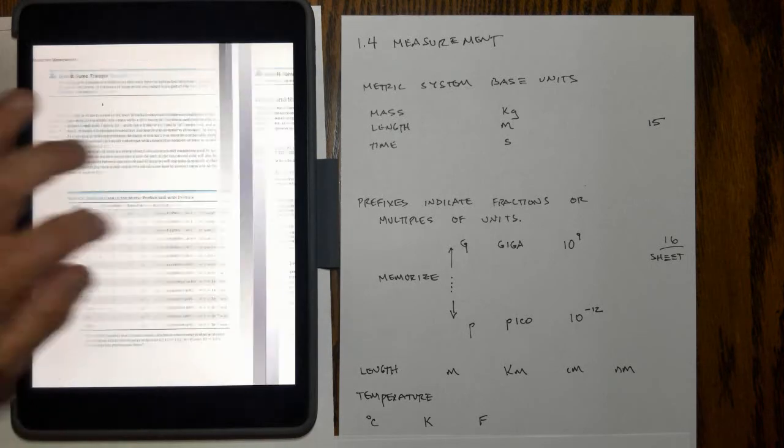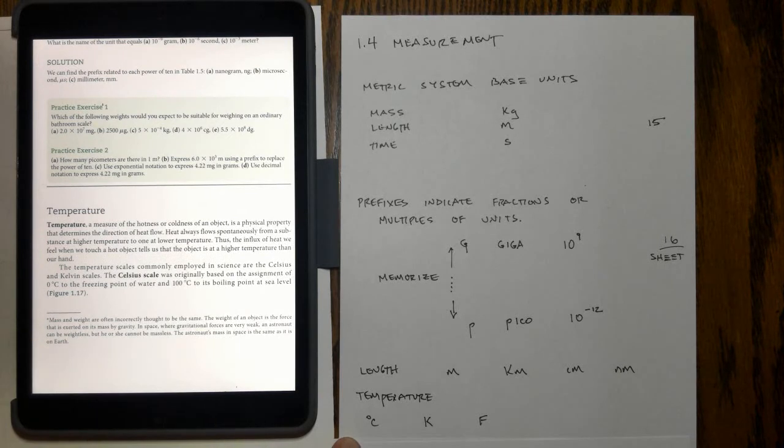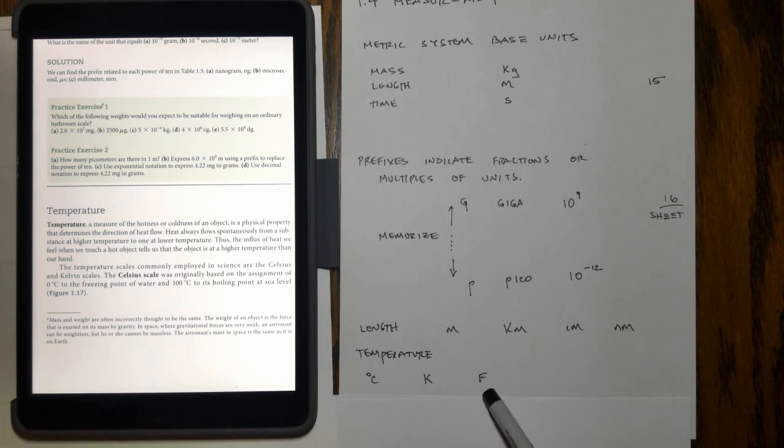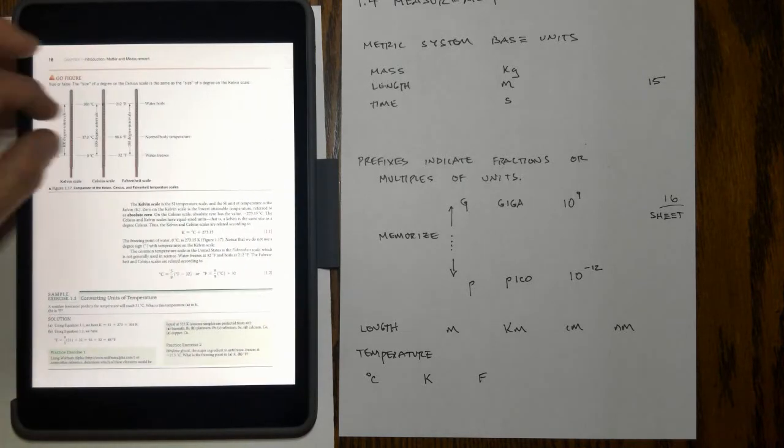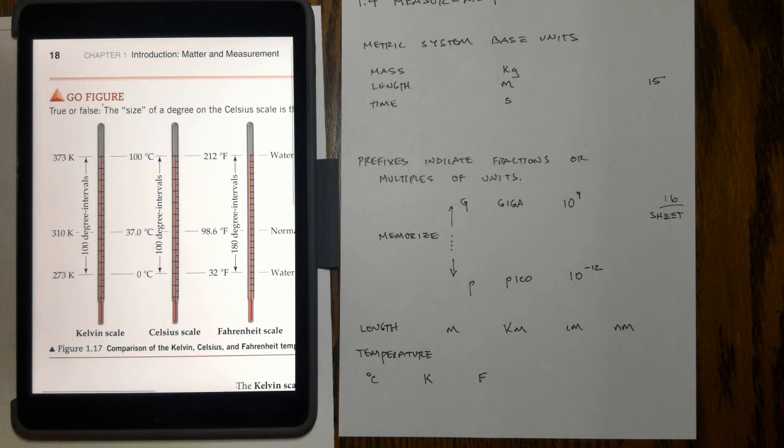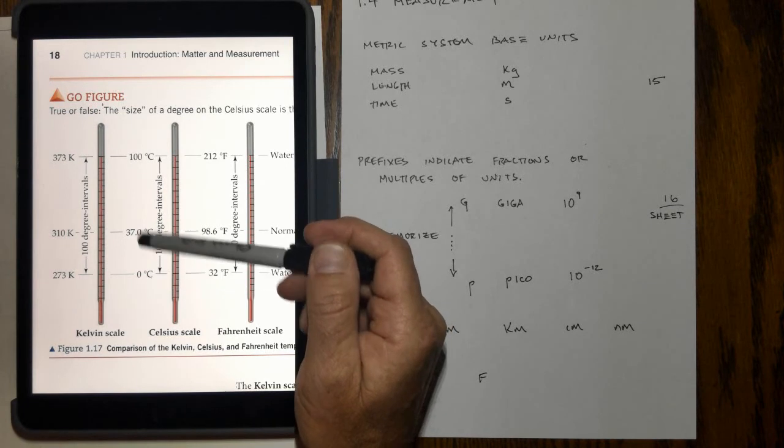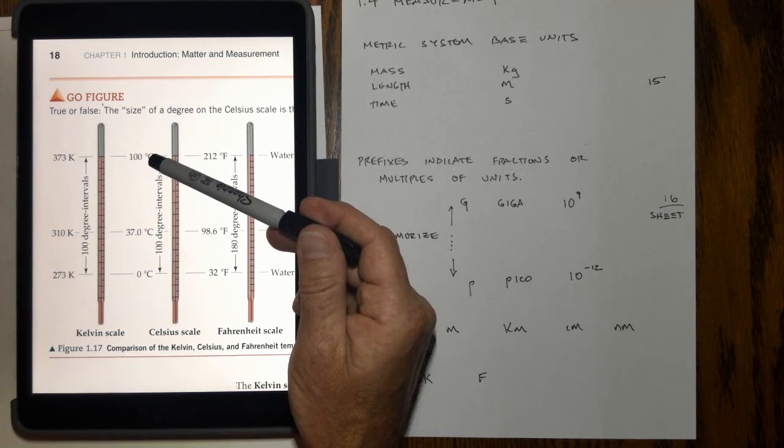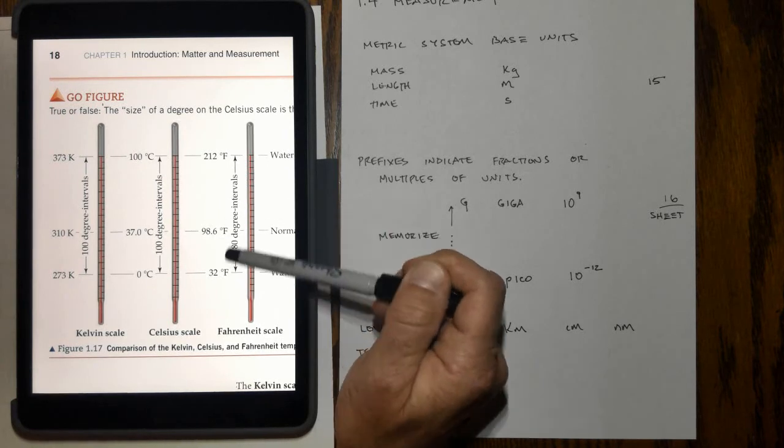Temperature is also one of the things that we'll measure in chemistry class. Temperature has three mainly used units. One is called Celsius, another is called Kelvin, and the other one most commonly used in America is called Fahrenheit. Converting between these is a critical piece. You can see that 273 Kelvin is actually the same as zero Celsius, which is the same as 32 Fahrenheit, the freezing point of water. There's a 100 degree interval between zero Celsius and 100 Celsius, the boiling point of water, which is 212 Fahrenheit. Notice that's a 180 degree interval here.